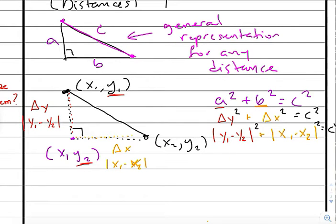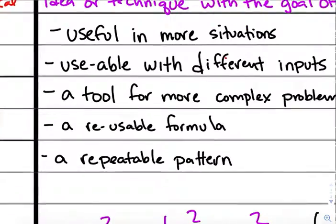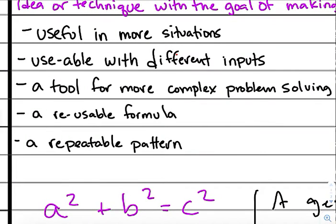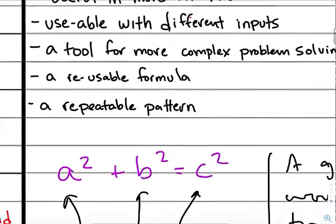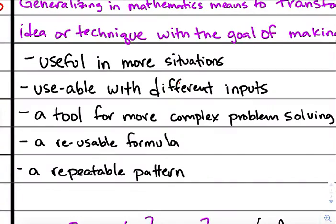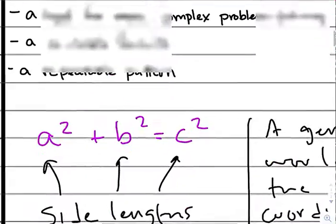Now, we've accomplished what we said we want to accomplish in terms of generalization. If you recall at the beginning of the notes, generalization occurs when we now make them useful for more situations, which we did, because we can now find any diagonal distance with this formula. We can use different inputs, which we're doing, because we can now accept coordinate values.